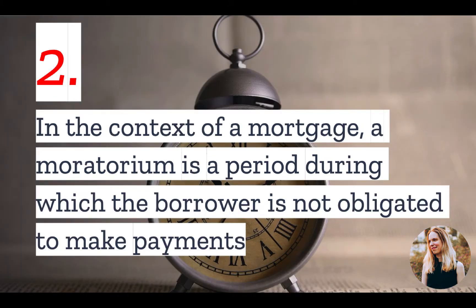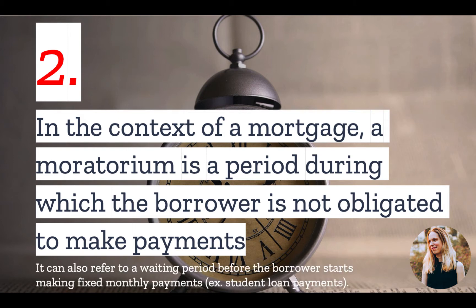Number two: in the context of a mortgage, a moratorium is a period during which the borrower is not obligated to make payments. It may also refer to a waiting period before the borrower starts making fixed monthly payments. A good example here, though not related to real estate, would be student loans — most of the time there is a delay between graduation and when payments start. But this can also happen in the context of a construction loan.